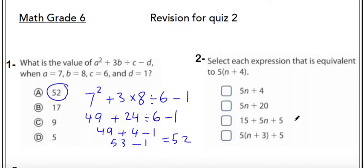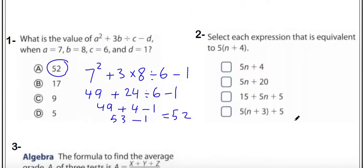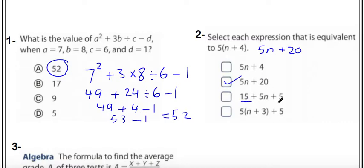Second question: select each expression equivalent to 5 times the bracket n plus 4. According to the distributive property, we can write it as 5n plus 5 times 4, which is 20. The first option has 15 plus 5 equals 20, so it equals 5n plus 20, which is correct.